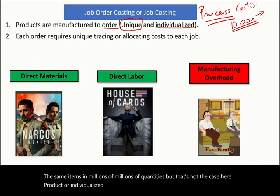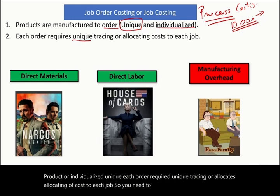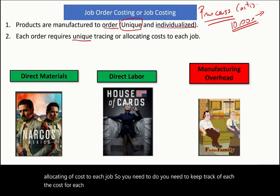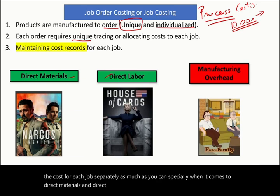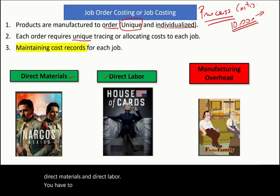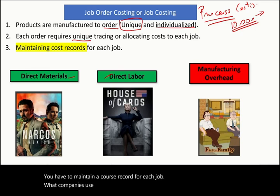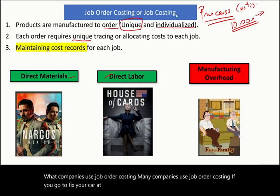Each order requires unique tracing or allocating of cost to each job. You need to keep track of the cost for each job separately, especially when it comes to direct material and direct labor. You have to maintain a cost record for each job. Many companies use job order costing — for example, if you go to fix your car at a garage, they keep track of the labor cost and the product cost used on that car.